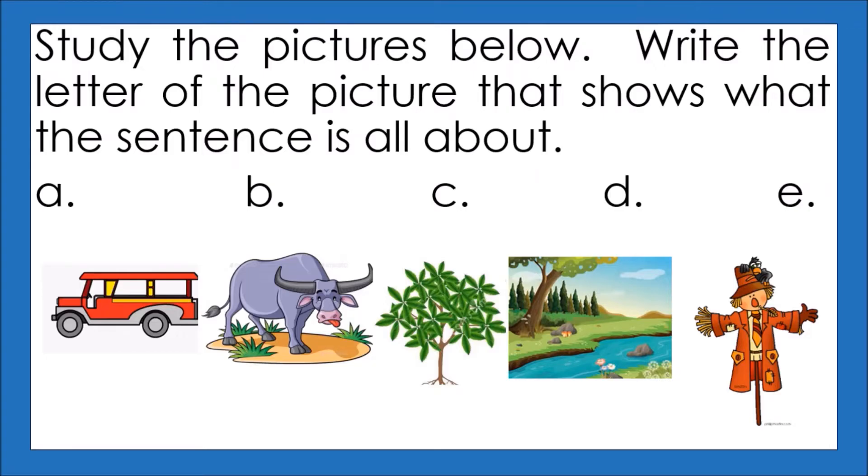Now study the pictures below. Write the letter of the picture that shows what the sentence is all about. For letter A: jeep. Letter B: carabao. Letter C: mango plant. Letter D: river. And letter E: scarecrow.